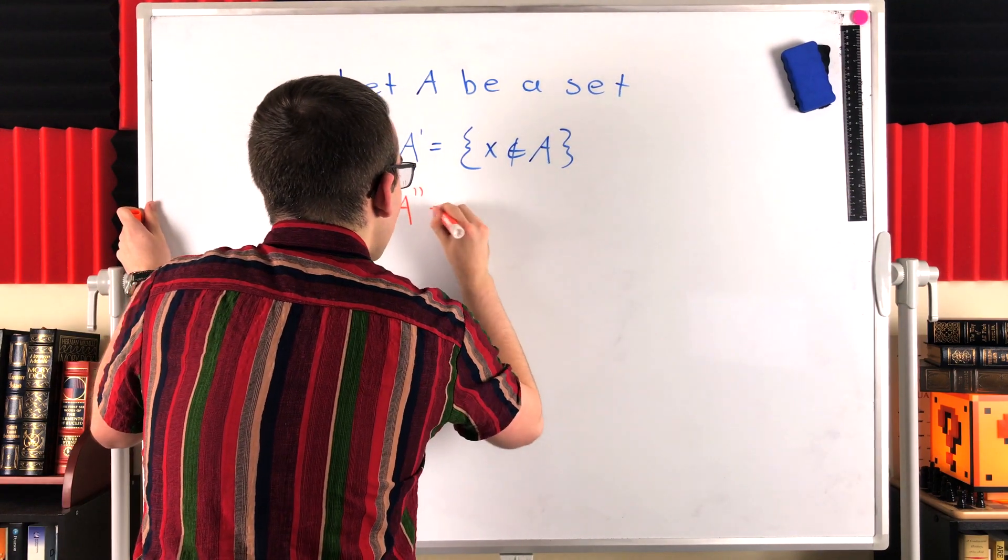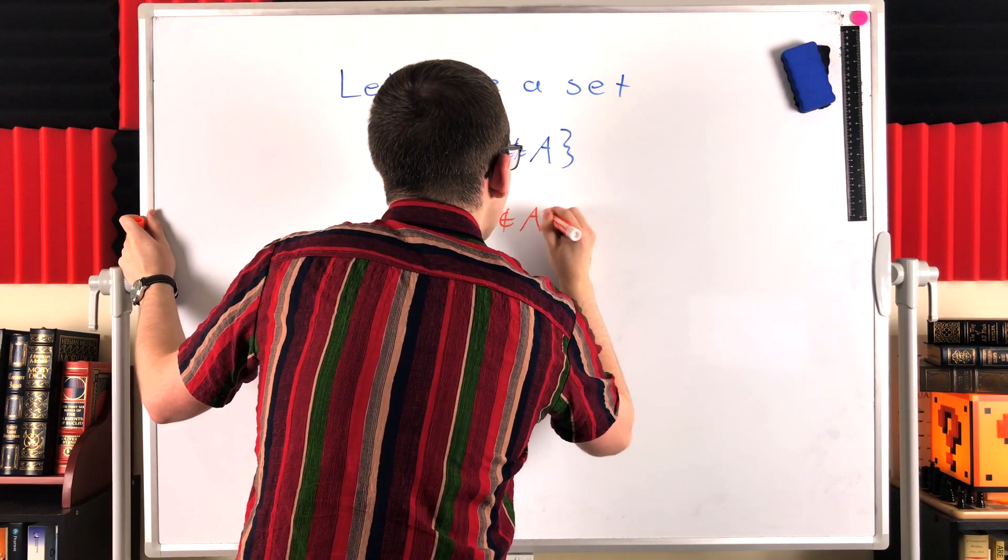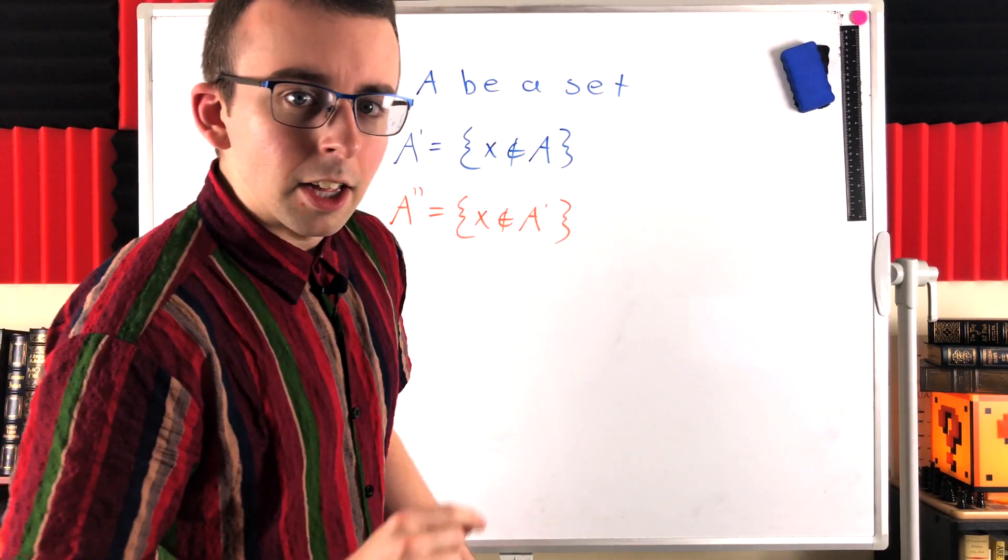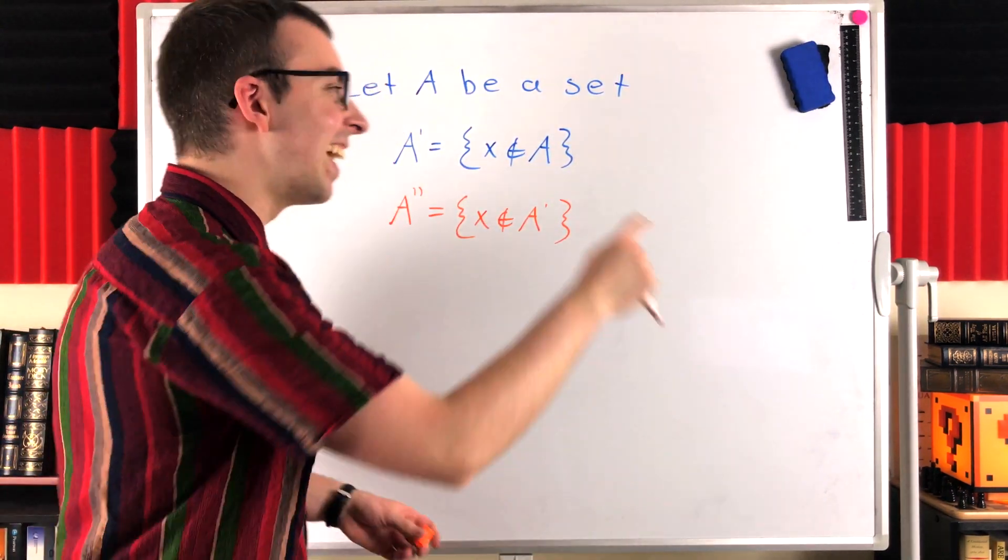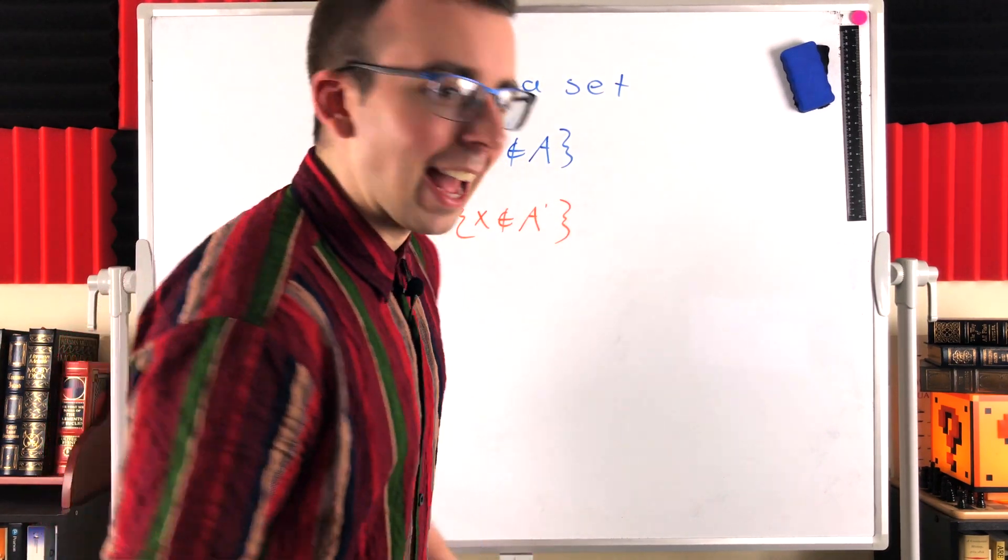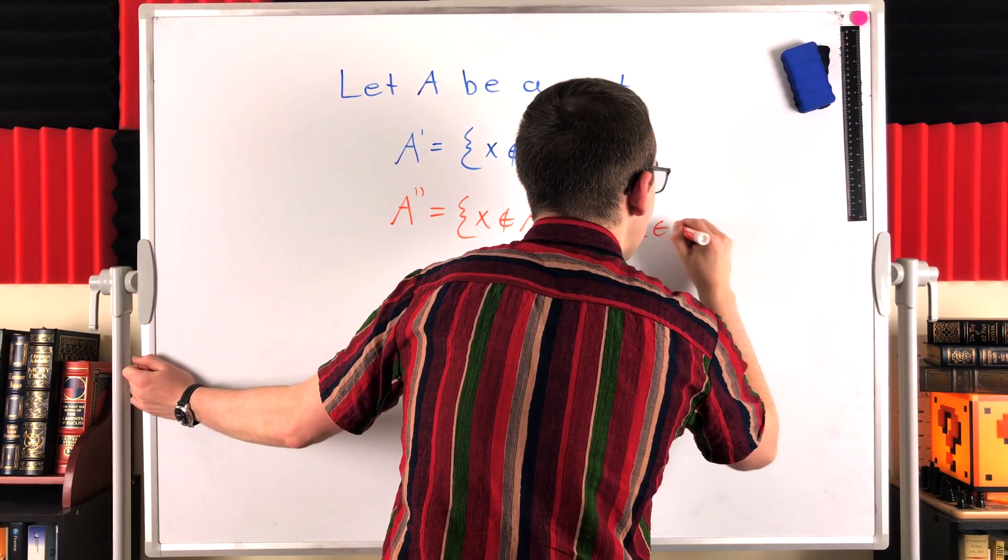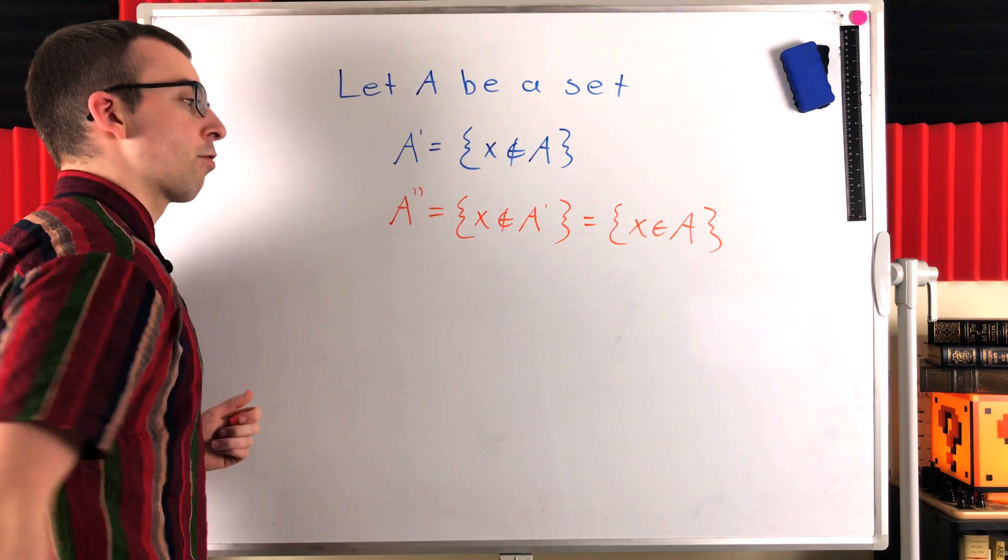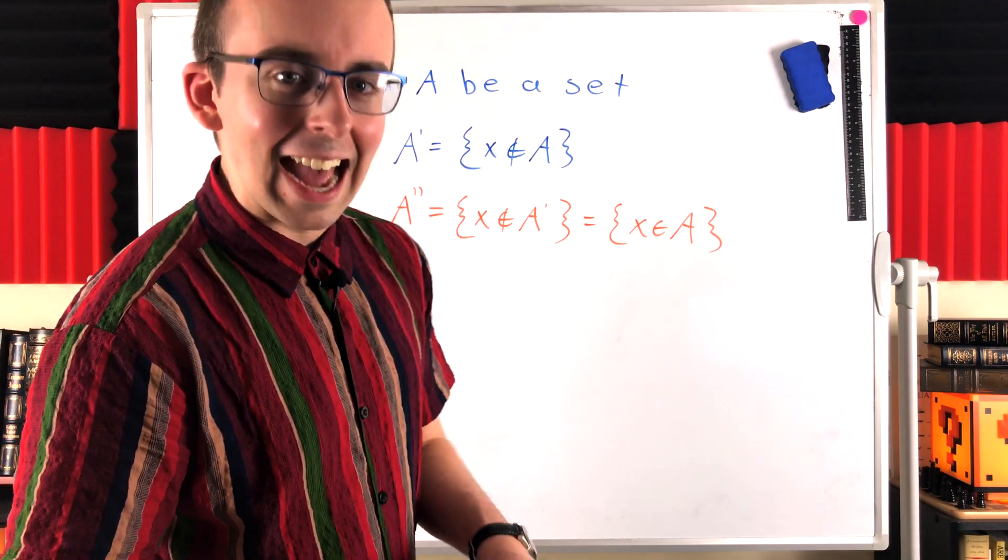The complement of the complement of A, by definition of set complement, has to contain the elements that are not in the complement of A. Well, to not be in the complement of A, you have to not fit this condition. The condition being not being an element of A. So if you don't fit the condition that you're not in A, that means you are in A. So as it turns out, the complement of the complement of A is just going to contain the elements of A. It's going to be the exact same set. So just another sort of reasoning through why if we take two complements, we're just going to end up right back where we started at A.